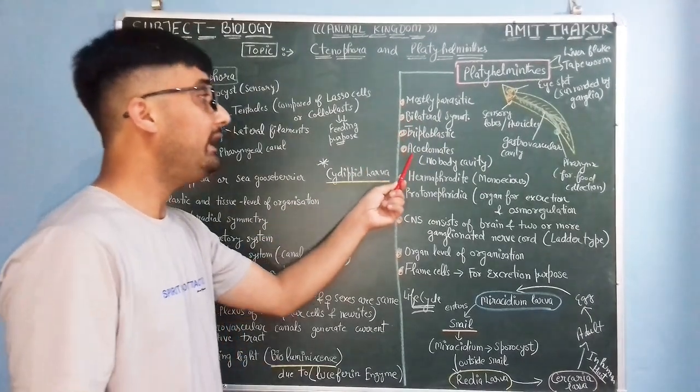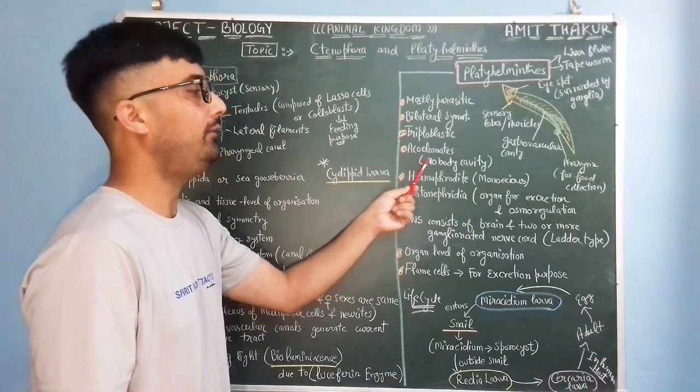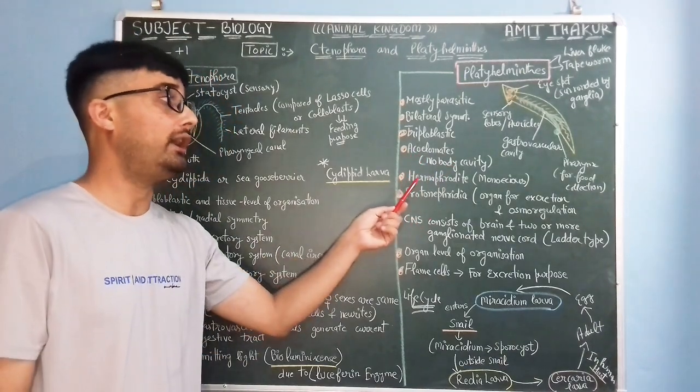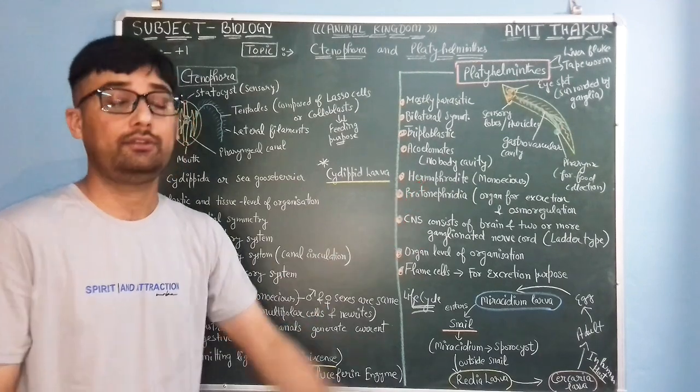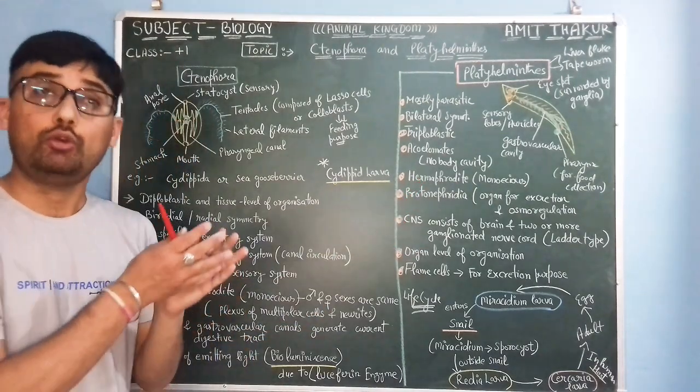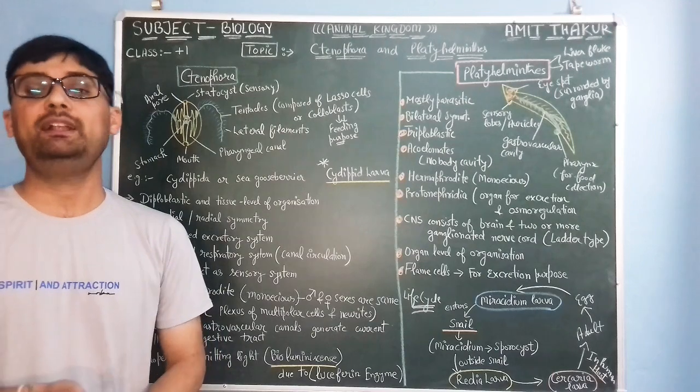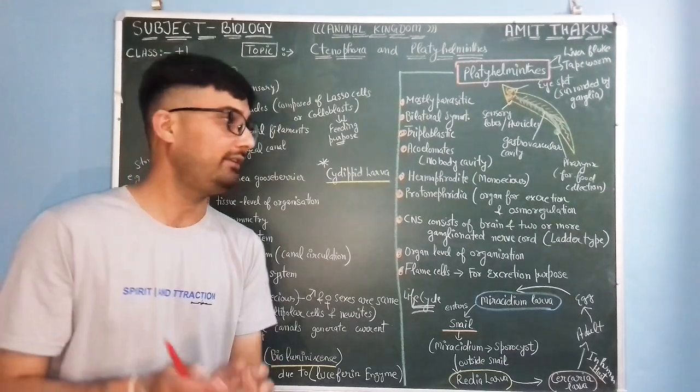They are acoelomates, means they do not have any body cavity. They also are hermaphrodites, means they are monoecious. Male and female sexes are not separate, they are the same.